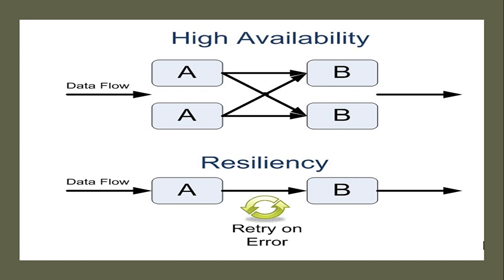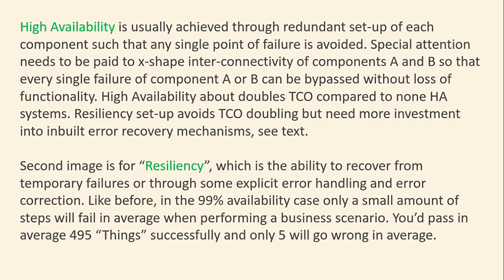Resiliency means the system can try to recover from its failure — it will do a retry. High Availability is really achieved through a redundant set of each component such that any single point of failure is avoided.